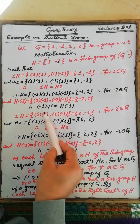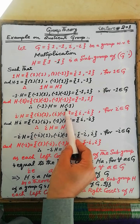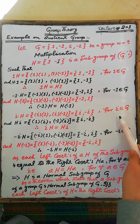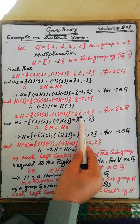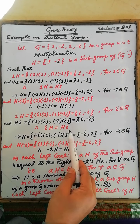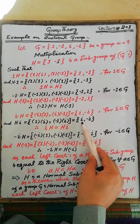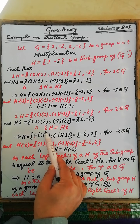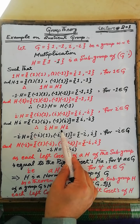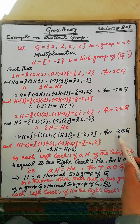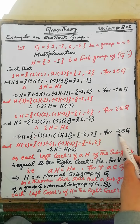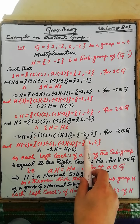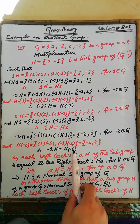These two sets are the same, that is the left coset determined by element -1 is equal to the right coset determined by element -1. Similarly, the left coset determined by element iota is the set containing 1, -1, iota, and -iota, and the right coset determined by element iota is the set containing iota and -iota. These two sets are the same, so the left coset equals the right coset for element iota. Similarly, for element -iota, the left coset equals the right coset.